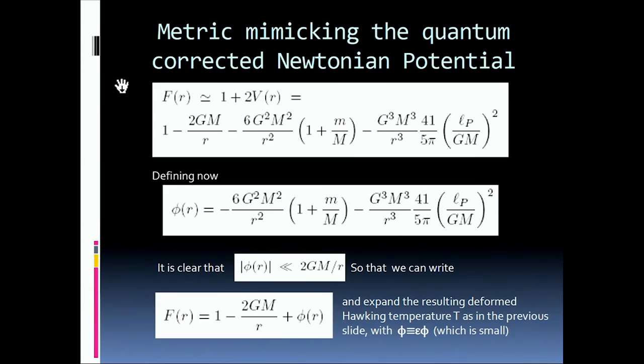And now what you do, of course, now you have the Newtonian potential, so you can write down the metric mimicking this Newtonian potential, which turns out to be this object here. And now, of course, what is this? It's just a deformation of the Schwarzschild metric. This is the deforming function, which is for ordinary r much smaller than the Schwarzschild term 2GM over r. So we are exactly in the situation described in the previous slides.